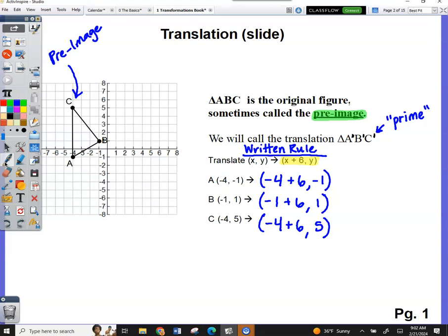And now let's clean it up. Negative 4 plus 6 is what? 6 minus 4. 2. Copy the y. That is my A prime. Negative 4 plus 6 is what? 5. Copy the y. That's my B prime. Negative 4 plus 6. Copy the y. That's my C prime.